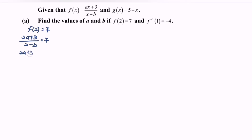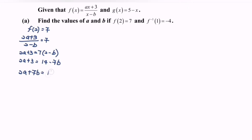So we will have 2a + 3 = 7 multiplied with (2 - b). Expand and simplify: 2a + 3 = 14 - 7b, so 2a + 7b = 11. That will be our first equation. Secondly, we need to find f inverse.